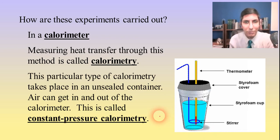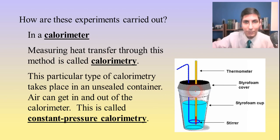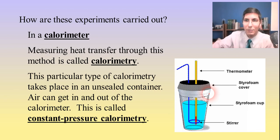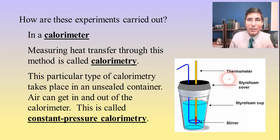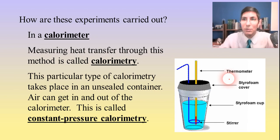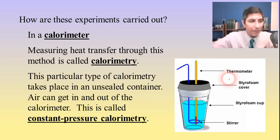This particular type of calorimetry takes place in an unsealed container — the styrofoam cover allows air to get in and out, so the pressure inside the calorimeter is the same as the atmospheric pressure outside. This is called constant pressure calorimetry. There is another type of calorimetry that AP chemistry normally does not cover, called constant volume calorimetry, which makes use of a device called a bomb calorimeter. If you're in a general chemistry course in college you will need to learn how to do that, but we can talk about that separately.